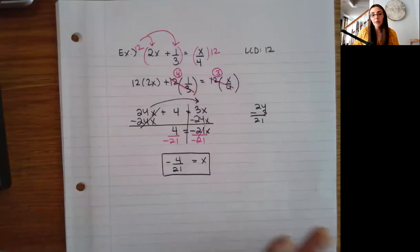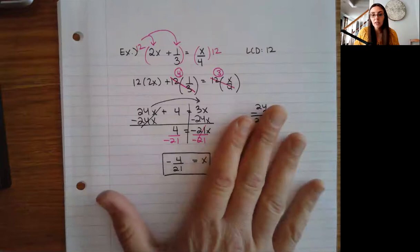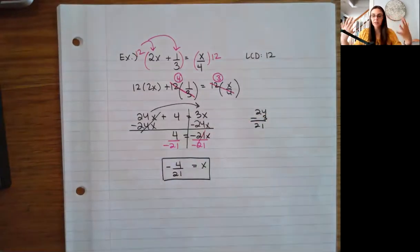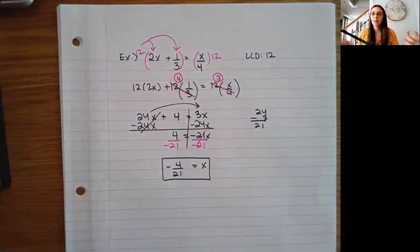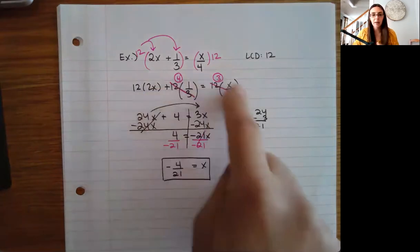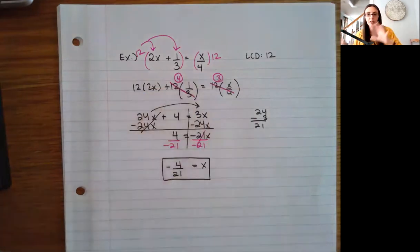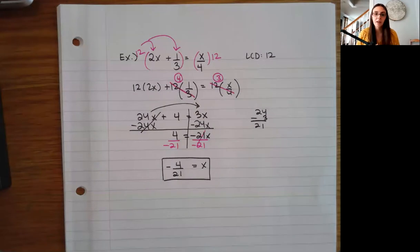So my preferred way to deal with fractions: clear parentheses first if I have them, then cancel those fractions by multiplying by the LCD, and then go back to regular rules — bring x's to one side, numbers to the other, combine like terms. The only new step here is canceling those fractions right at the beginning.